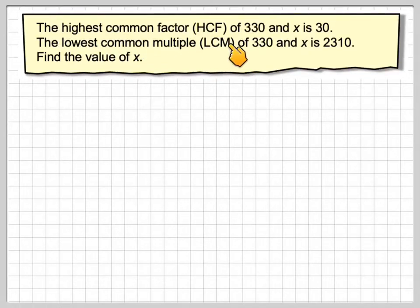The highest common factor, HCF, of 330 and x is 30. The lowest common multiple, LCM, of 330 and x is 2310. Find the value of x.